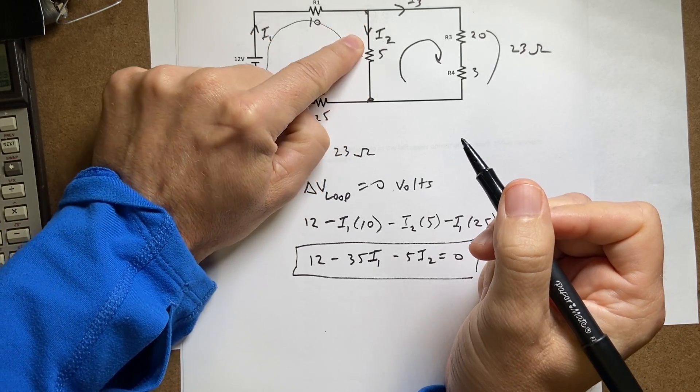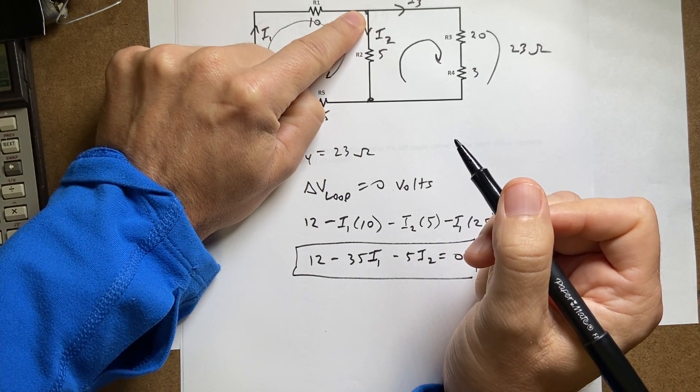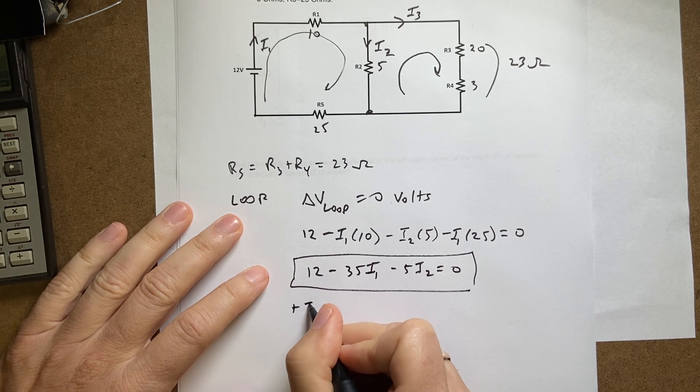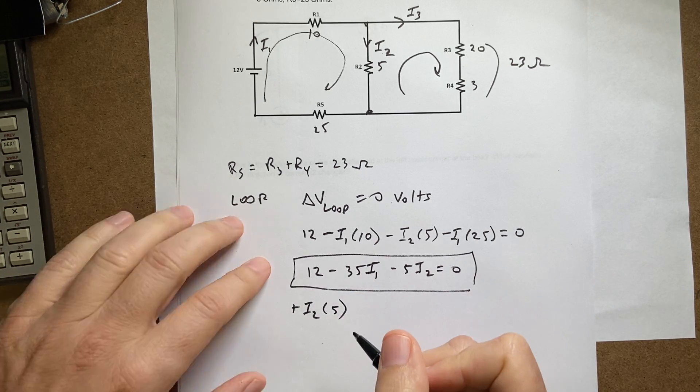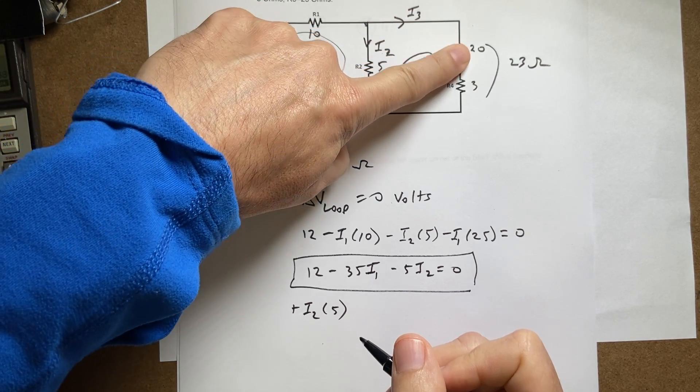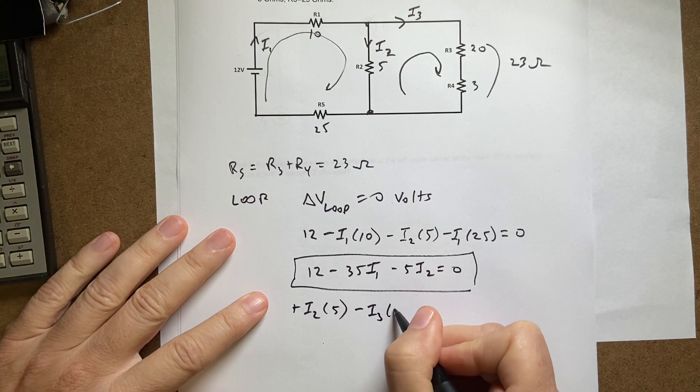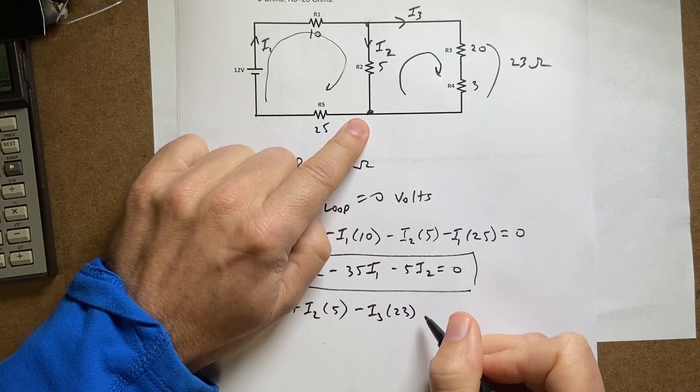So the first thing I'm going to do is go across this resistor, but I'm going in this direction—I go in the opposite direction as the current, so I'm actually going to get plus i2 times the resistance of 5. Now I'm going in the same direction as i3, and I get minus i3 times 23, and I get back to here and I get zero.